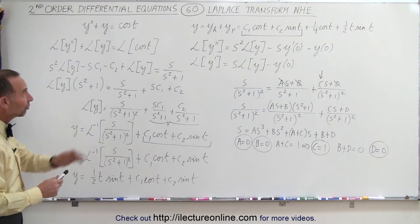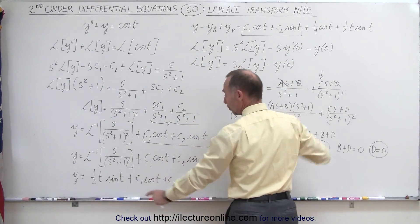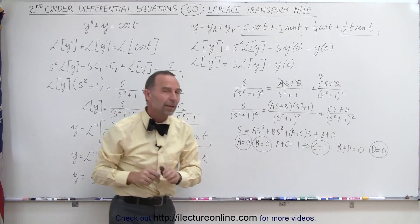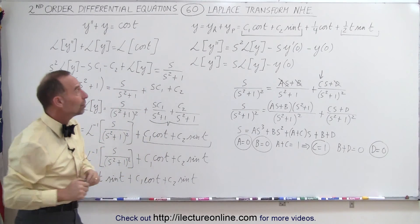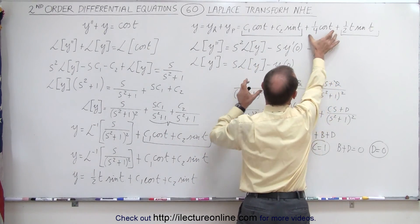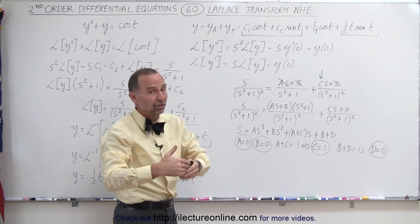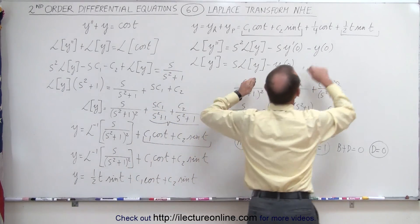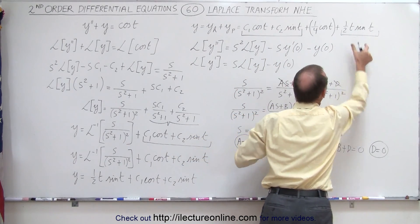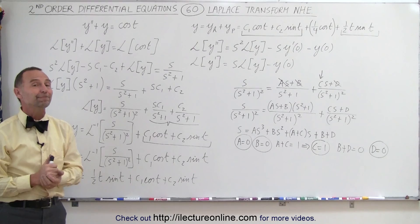Comparing with the previous result, we have the homogeneous part C1·cos(t) and C2·sin(t), and the particular part one-half·t·sin(t). The one-quarter·cos(t) term from the particular solution doesn't appear separately because it gets absorbed into C1·cos(t) — C1 plus one-quarter is simply another constant. So that part of the particular solution gets buried inside the homogeneous solution, and this confirms we found the correct solution using the Laplace transform technique.